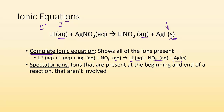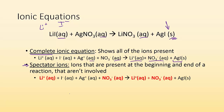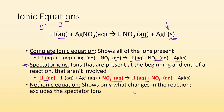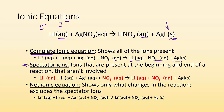Now I want to introduce a new term: spectator ion. Spectators just watch — like at a football game, you're a spectator, not a player. Spectator ions are ions that are present at the beginning and end of a reaction because they're not involved and not changing. In our complete ionic equation, the lithium ion and nitrate ion stay the same — they're spectator ions. The net ionic equation shows only what changes and excludes spectator ions, so you cross out spectators to see what's actually happening.